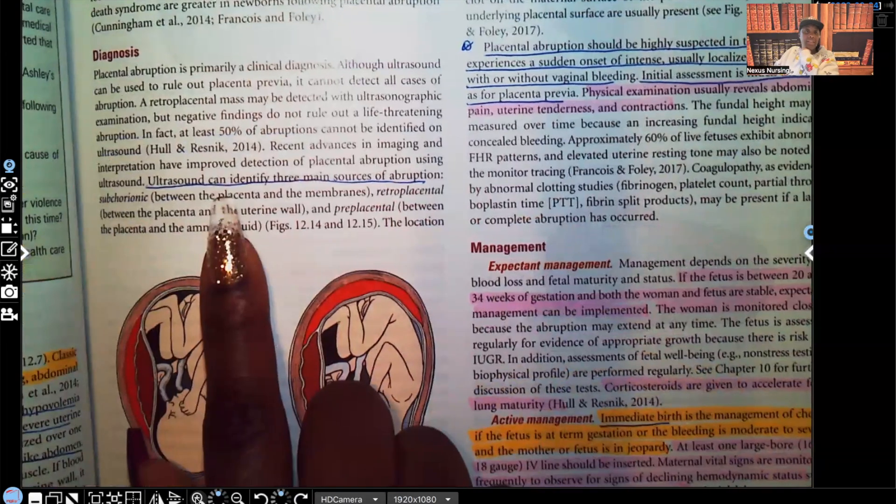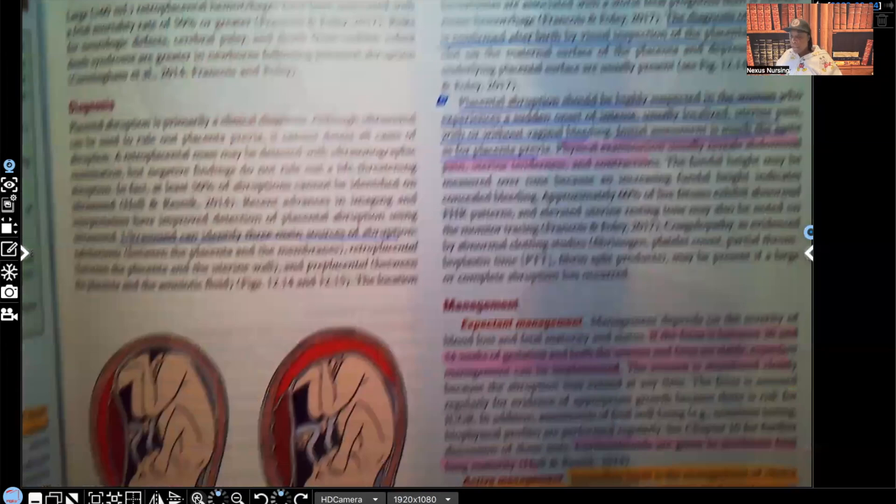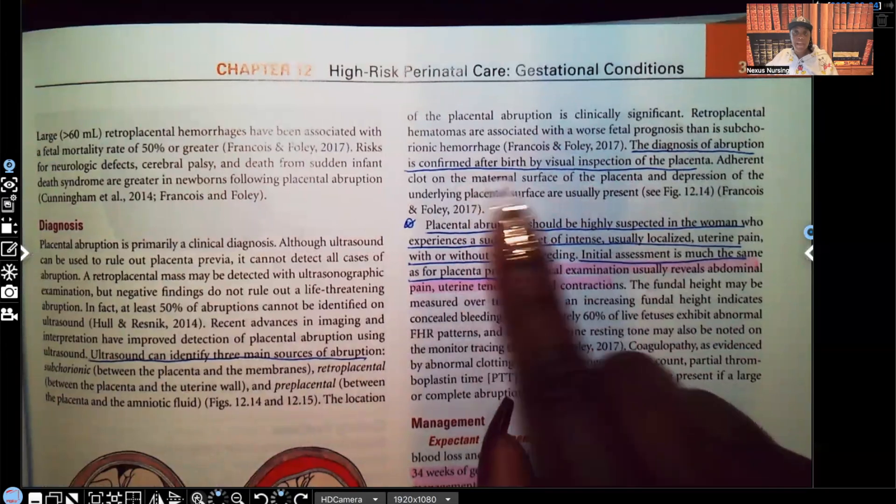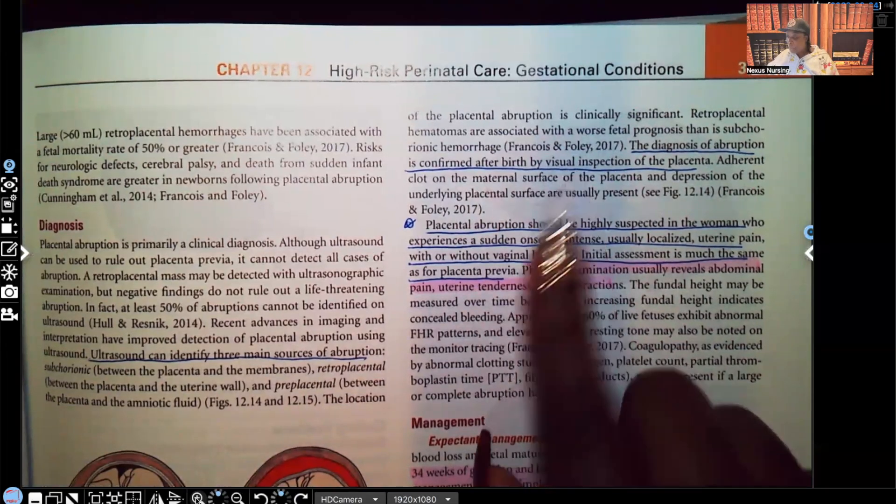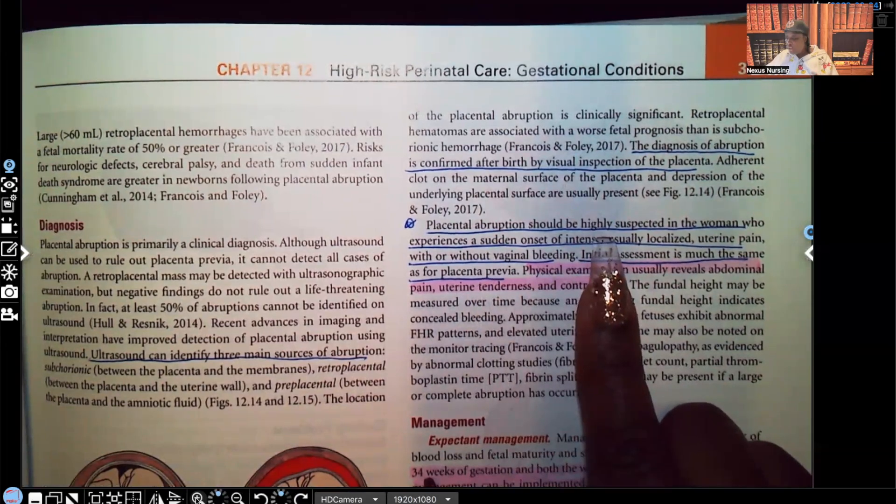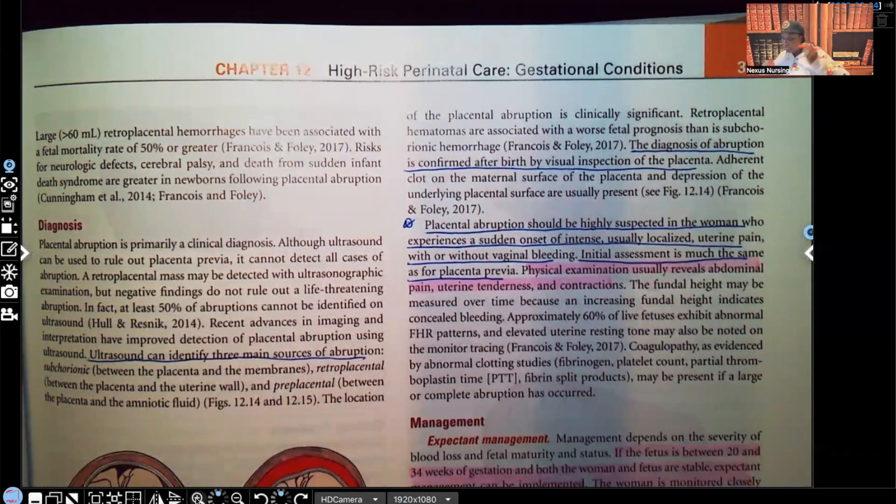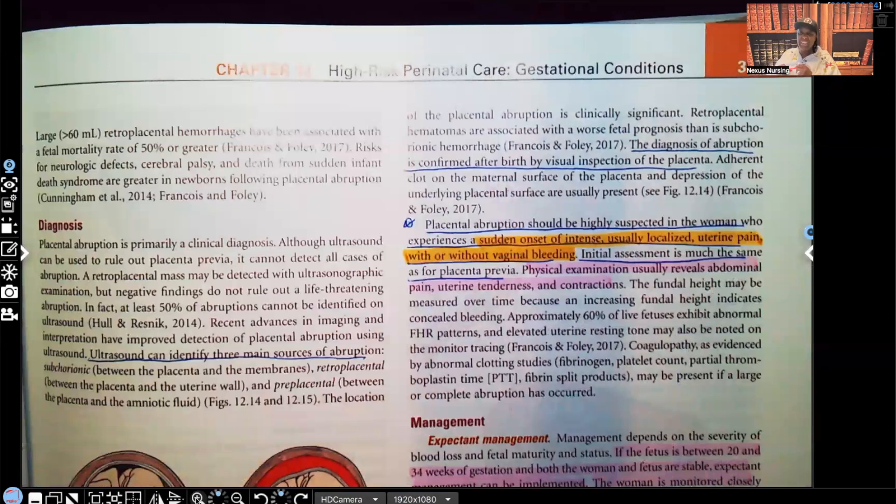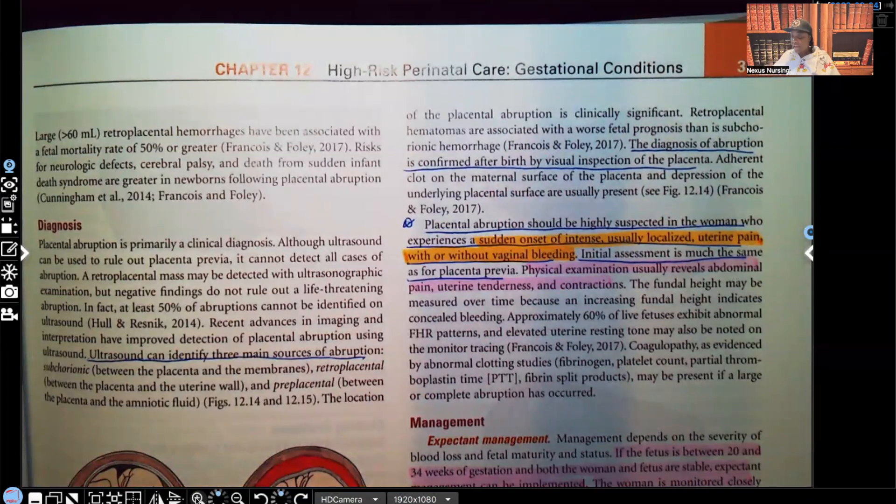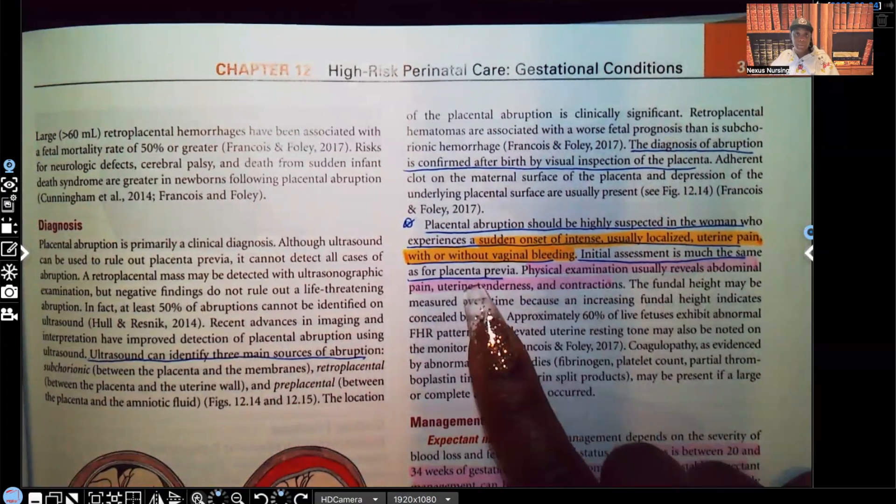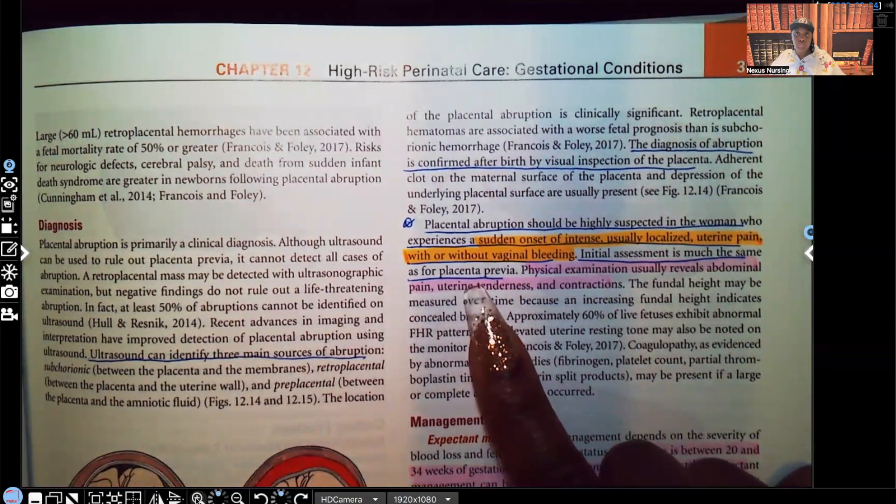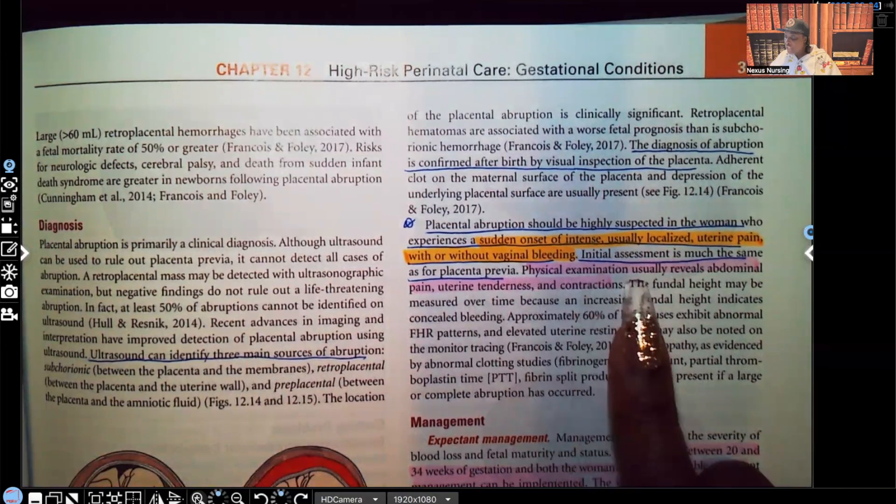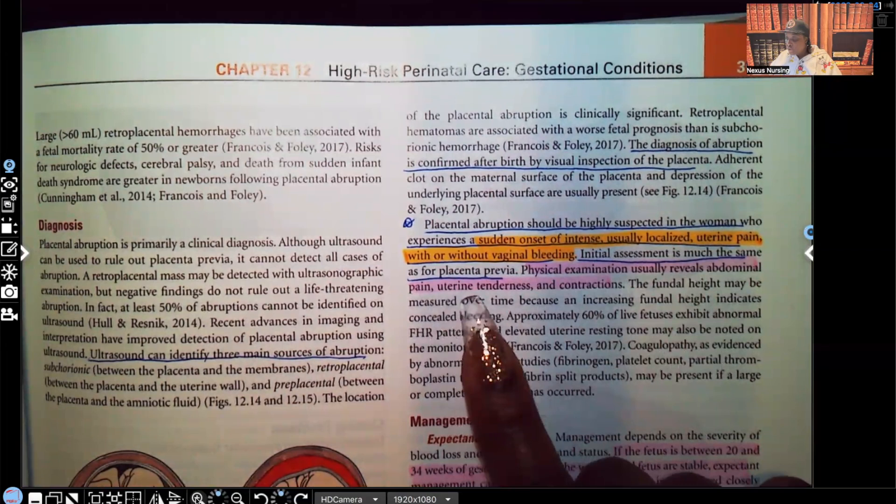Diagnosis. Ultrasound can identify the three main sources of abruption. The diagnosis of abruption is confirmed after birth by visual inspection of placenta. Placenta abruption should be highly suspected in the woman who experiences sudden onset of intense, usually localized uterine pain with or without vaginal bleeding. Usually you're going to see vaginal bleeding, but it's very important to understand that they will have pain. The initial assessment is much the same as for placenta previa. The biggest difference is going to be pain. Placenta previa without pain, with pain, placenta abruption.